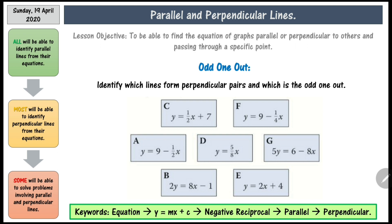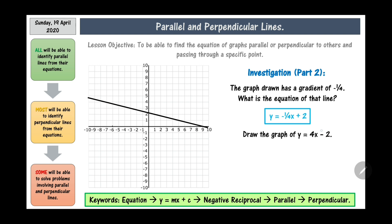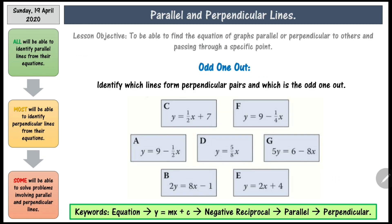Now, identify which lines form perpendicular pairs and which one is the odd one out. There are 7 equations there for you. Some of them may require rearranging — it's not as straightforward as it looks. Pause the video, have a go, try to find the odd one out, and then press play again when you are ready to go through the answers.